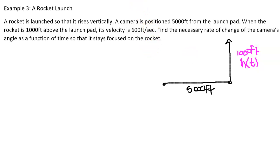The velocity is 600 feet per second and so velocity we're going to consider our dh/dt or our h prime is 600 feet per second. Find the necessary rate of change of the camera's angle as a function of time so that it stays focused on the rocket.